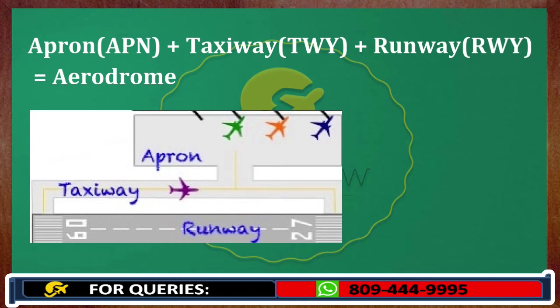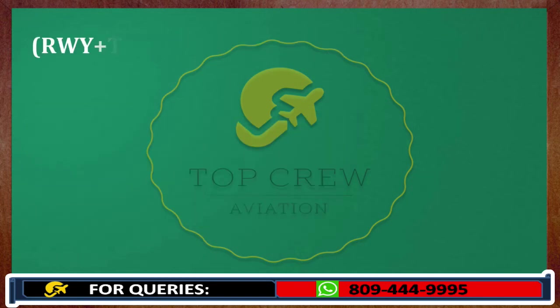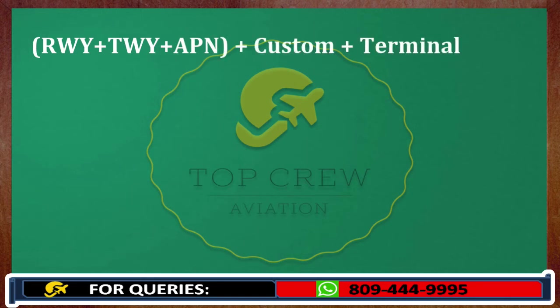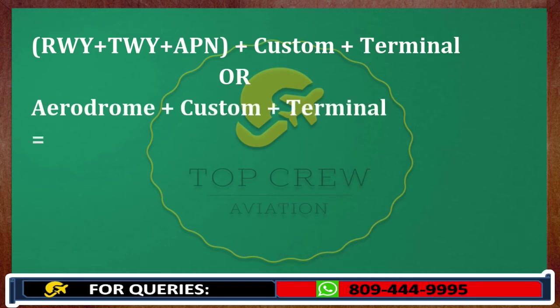There is one more term: airport. There is a difference between aerodrome and airport. Aerodrome means we have apron, taxiway and runway. To make it an airport, we have to add two more things: customs and terminal. So runway, taxiway, apron, customs and terminal — the combination of all these things is known as airport.